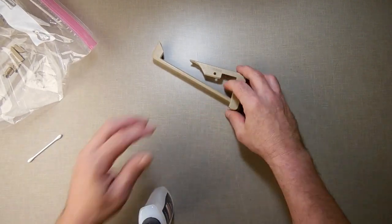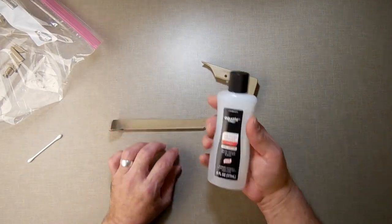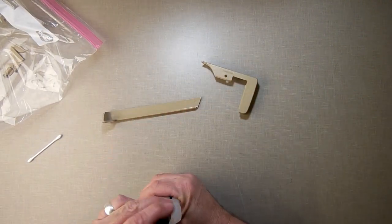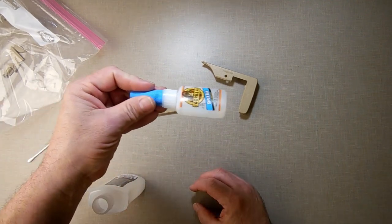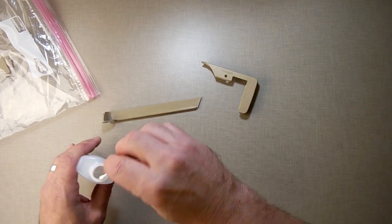So I'm gonna try to put this back together. I have been told that you can use 100% acetone to weld plastic back together. So I'm gonna try that before I try Gorilla Glue. Let's see what happens.